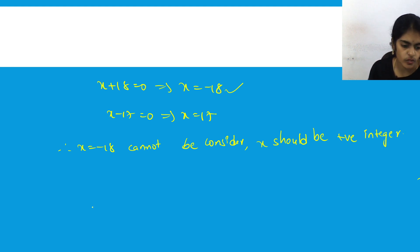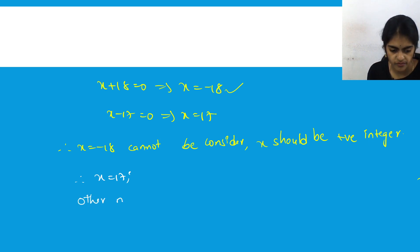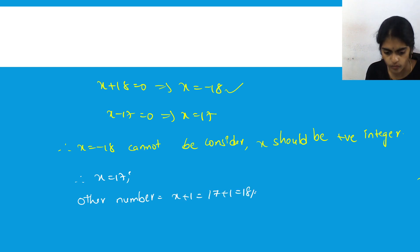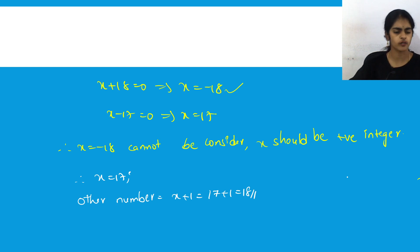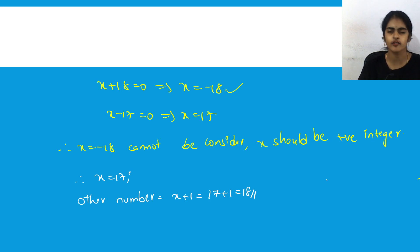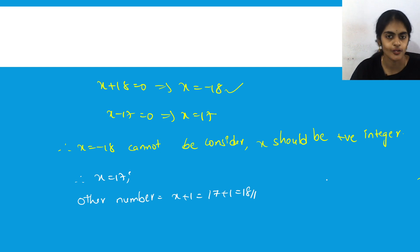Since x = 17, the other consecutive integer is x + 1 = 18. So the two consecutive positive integers are 17 and 18. I'll discuss from question number 4 in the next class. Do join the free classes, and if you found this helpful, please comment, like the video, and subscribe to the channel. Thanks for watching, take care.